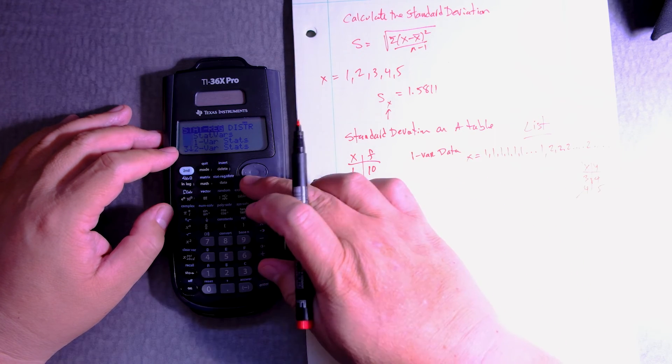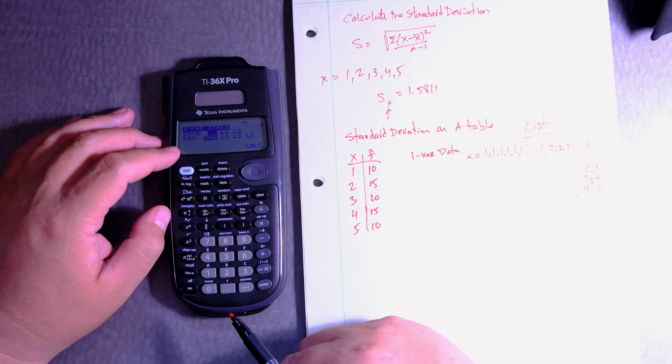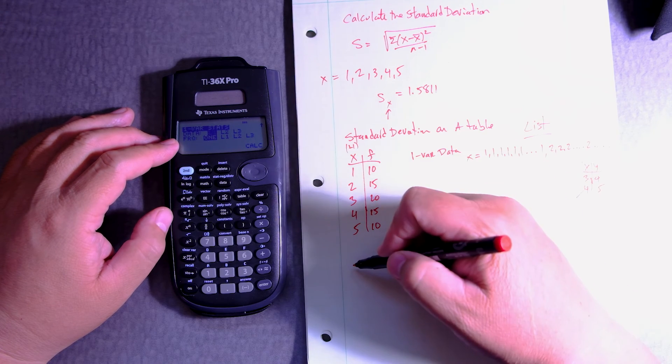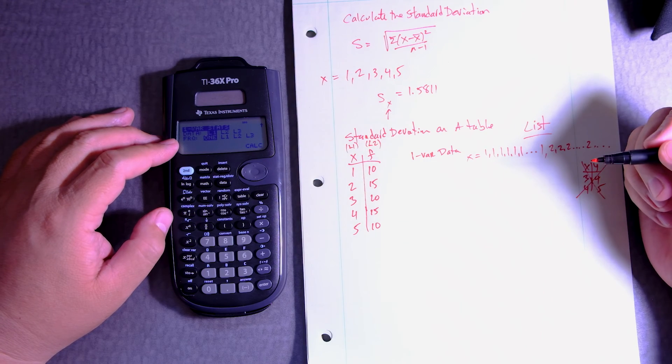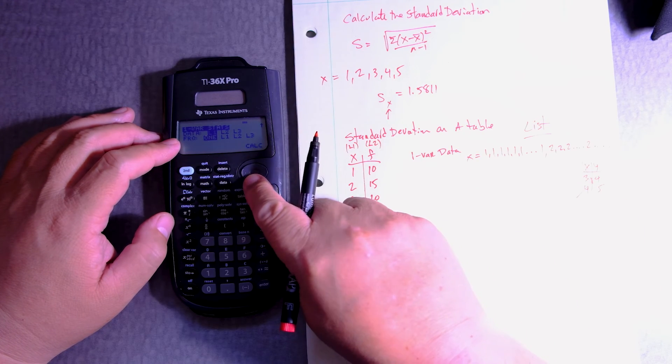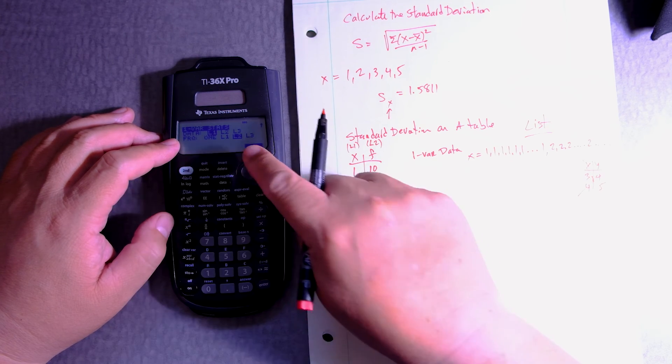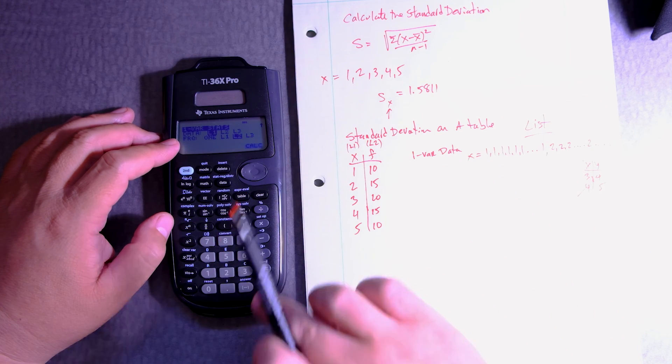So I go to one variable stats, and then press 2 or move down to 2. This is important. L1. This is L1, the column L1 on my calculator. You got to tell the calculator you have an L2, which is your frequency. So you go down, go across. You have to enter. So now, L1 and L2 are locked. Then press enter for calculate.